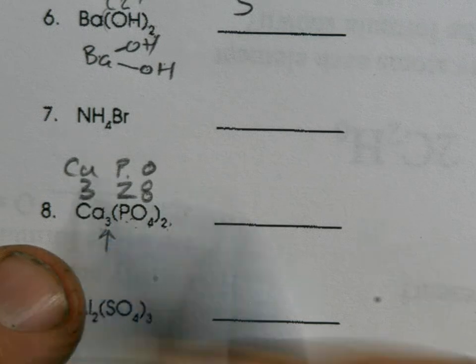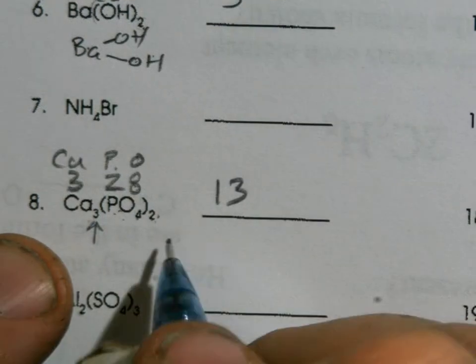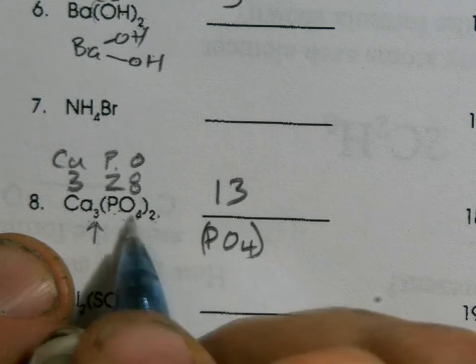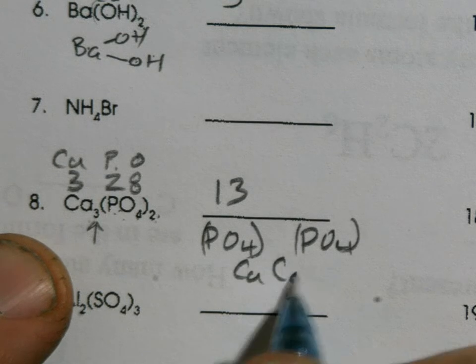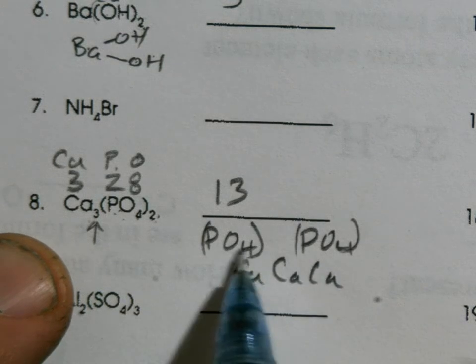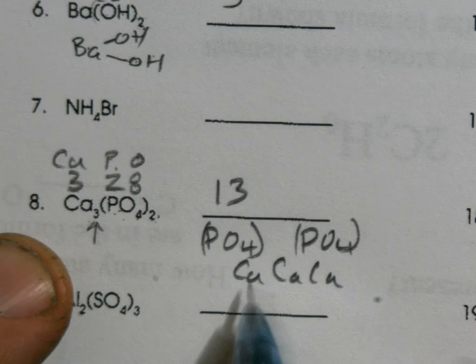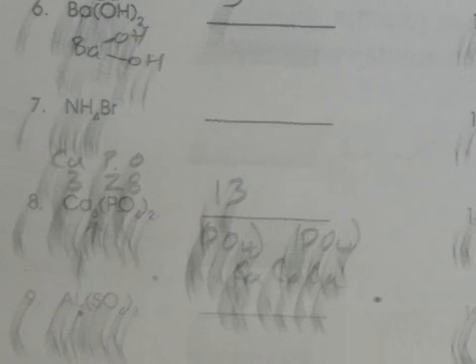So we got eight, nine, ten, eleven, twelve, thirteen. If that's kind of hard to conceptualize, then do PO4 and then do another PO4, and it's attached to three calciums here. So we've got four, five, six, seven, eight, nine, ten, eleven, twelve, thirteen is what we got there. So that's how you work on those. Go to it.